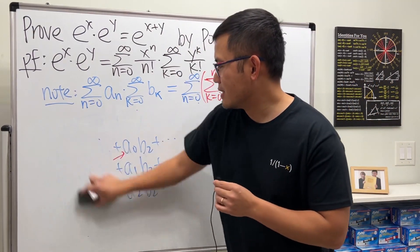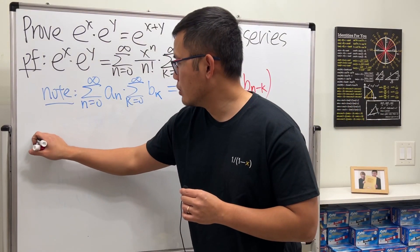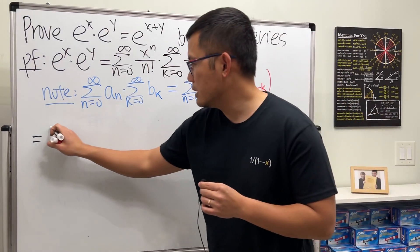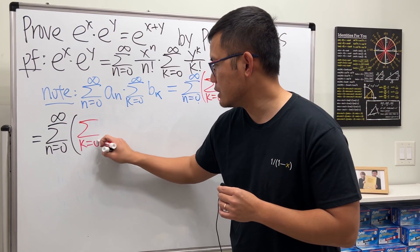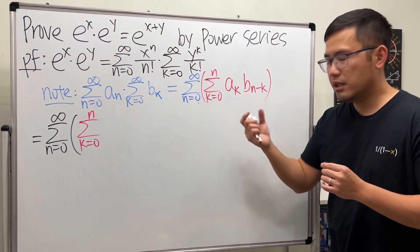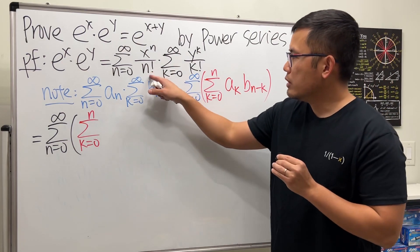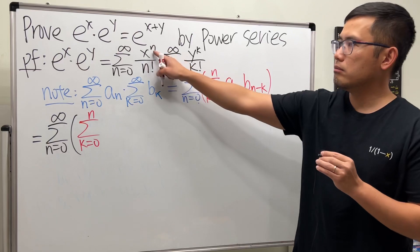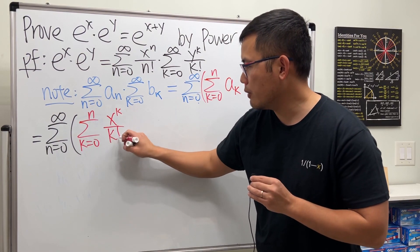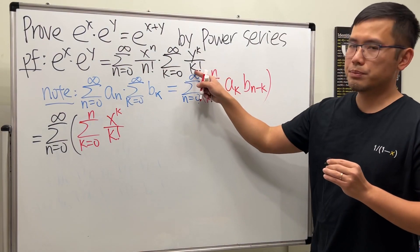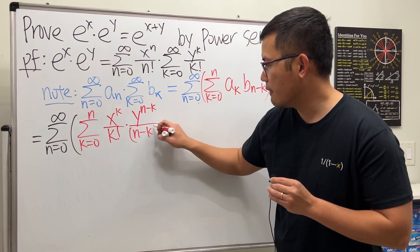Now we use the Cauchy product to multiply the power series. This gives us the outer series as n goes from 0 to infinity, and the inner series as k goes from 0 to n. We replace all the n's with k for the e^x term, giving x to the k over k factorial, and for b_{n-k} we substitute n minus k into all the k's, giving y to the n minus k over n minus k factorial.